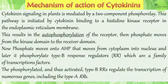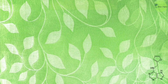Cytokinin signaling in plants is mediated by a two-component phosphorelay pathway. This is initiated by cytokinin binding to a histidine kinase receptor in the endoplasmic reticulum membrane, resulting in autophosphorylation of the receptor. The phosphate moves from the kinase domain to the receiver domain, then onto AHP, which moves from the cytoplasm into the nucleus. There it phosphorylates type-B response regulators — transcription factors — which regulate transcription of numerous genes including type-A response regulators, mediating cytokinin action.